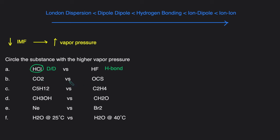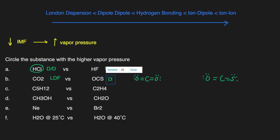Next: CO2 versus OCS. We can start by looking at the Lewis structure to determine if each is polar or nonpolar. CO2 looks like this, and you can see that this molecule is completely symmetrical, which makes it nonpolar. If it's nonpolar, it will only have London dispersion forces. OCS, on the other hand, looks like this and is not symmetrical, so it's polar. Its primary intermolecular force will be dipole-dipole. London dispersion force is weaker than dipole-dipole, so CO2 will have the higher vapor pressure.